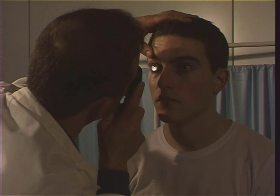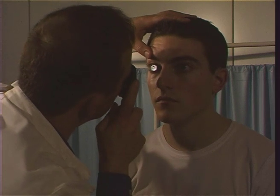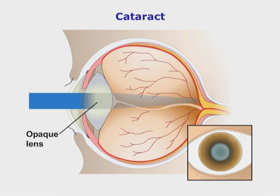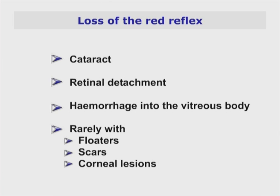Begin examining with your eye level with theirs at about 10–15 cm away and slightly lateral to the line of vision, approximately 15 degrees laterally. Shine the beam into the pupil and look for a reddish glow. This is known as the red reflex, which means that you are now looking at the patient's retina. If you are unable to see the red reflex, the lens may be opaque, such as with a cataract, and in such cases you may be unable to complete the examination. It may also be absent in some cases of retinal detachment, hemorrhage into the vitreous body, or rarely with floaters, scars or corneal lesions.